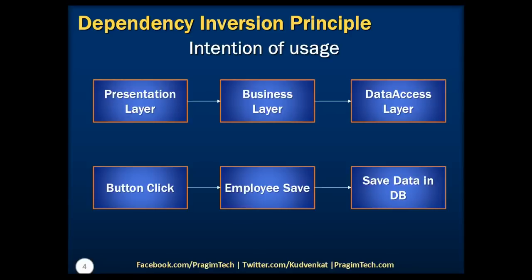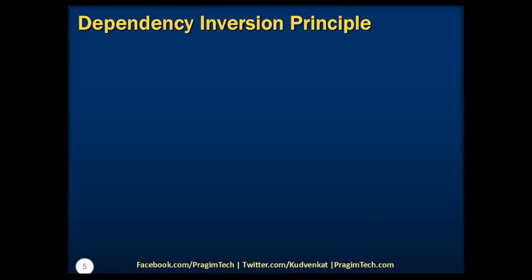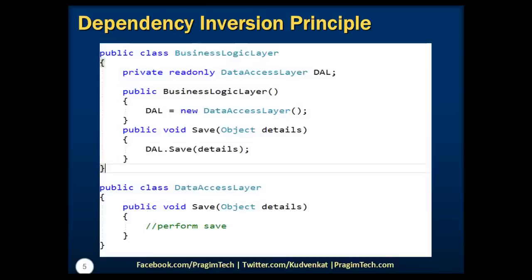Let's see this problem with the sample code. Notice from the given code, the business logic layer is directly dependent on the lower-level data access layer, and it's hard to perform any unit tests on this code as both are coupled. Of course, we can do some amount of testing on the data access layer, but imagine if the data access layer needs to be further extended to SQL and XML layers — implementation to extend it becomes tedious and much more complicated.